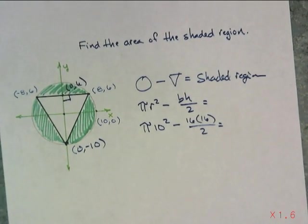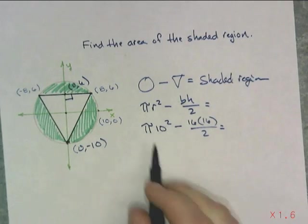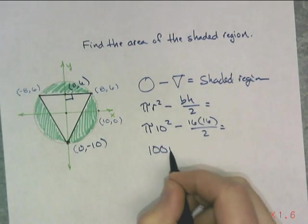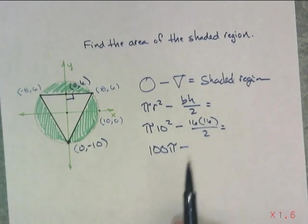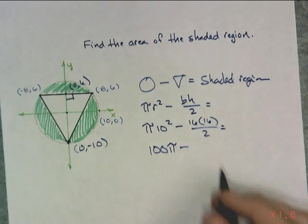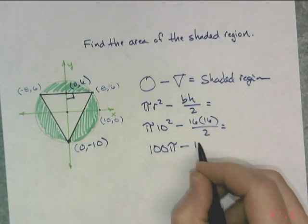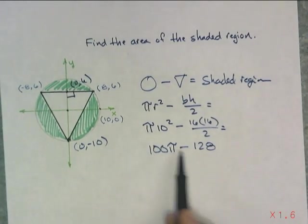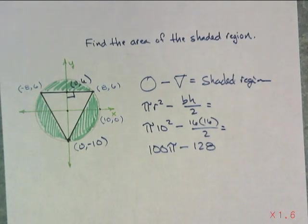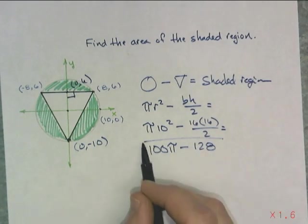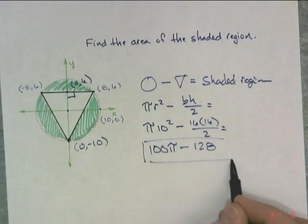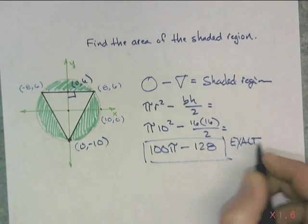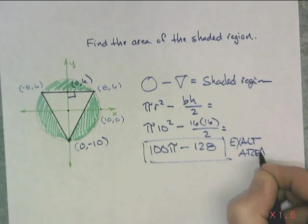So now we just need to calculate this. πr², that's 100π. 16 times 16 and then divided by 2, that's going to be the same thing as 8 times 16 or 128. And if you'll notice right now, I can't do any more manipulation unless I put in a value for π. So this indeed is the exact area of the shaded region.